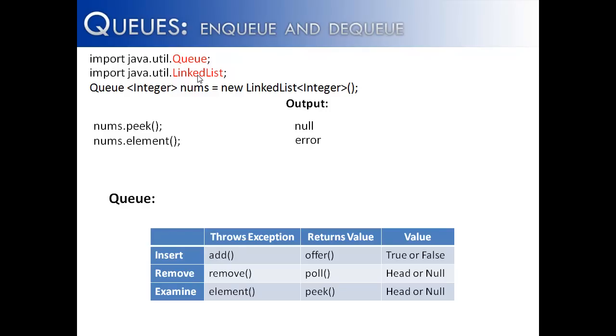And so the last item in is going to be the last item out. Queues have similar methods to accomplish the same goal of looking at, inserting, and removing items from a queue. But there is a slight difference in what they return and how they act with different queues.